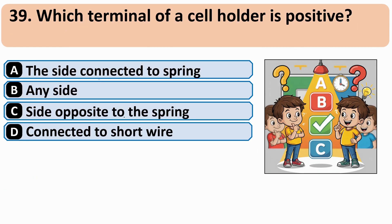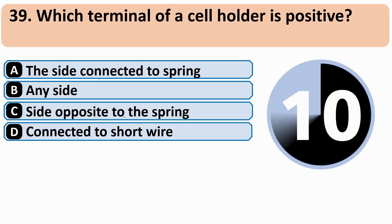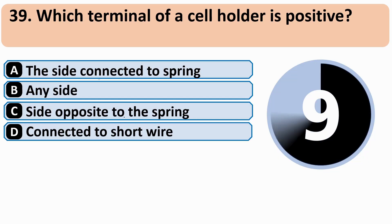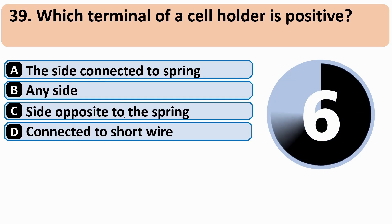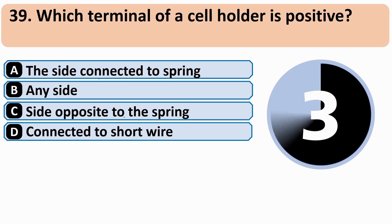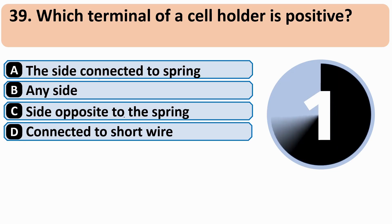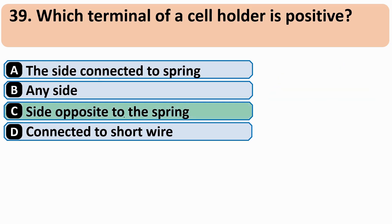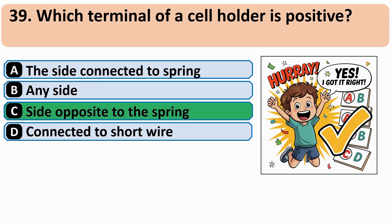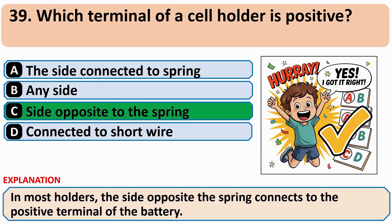Which terminal of a cell holder is positive? The correct answer is C: Side opposite to the spring.